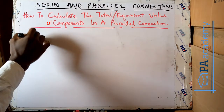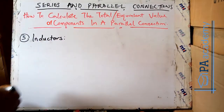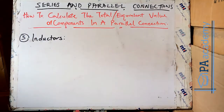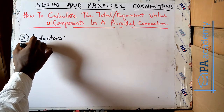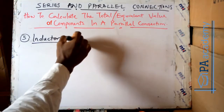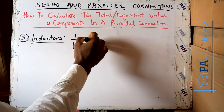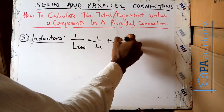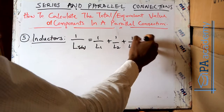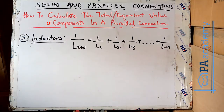Number 5 is inductors. If you are having inductors in a parallel circuit, how do we calculate the equivalent value? To do that, you use: 1 over L_total is equal to 1 over L1 plus 1 over L2 plus 1 over L3, and so on, depending on the total number of inductors in the connection.